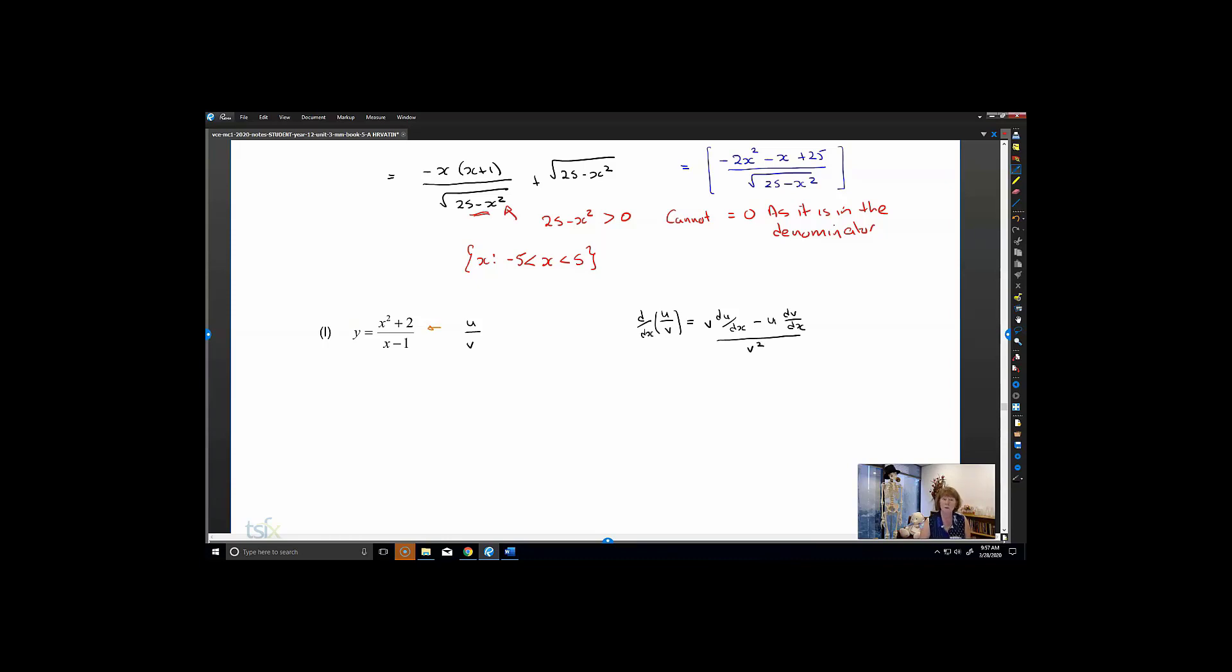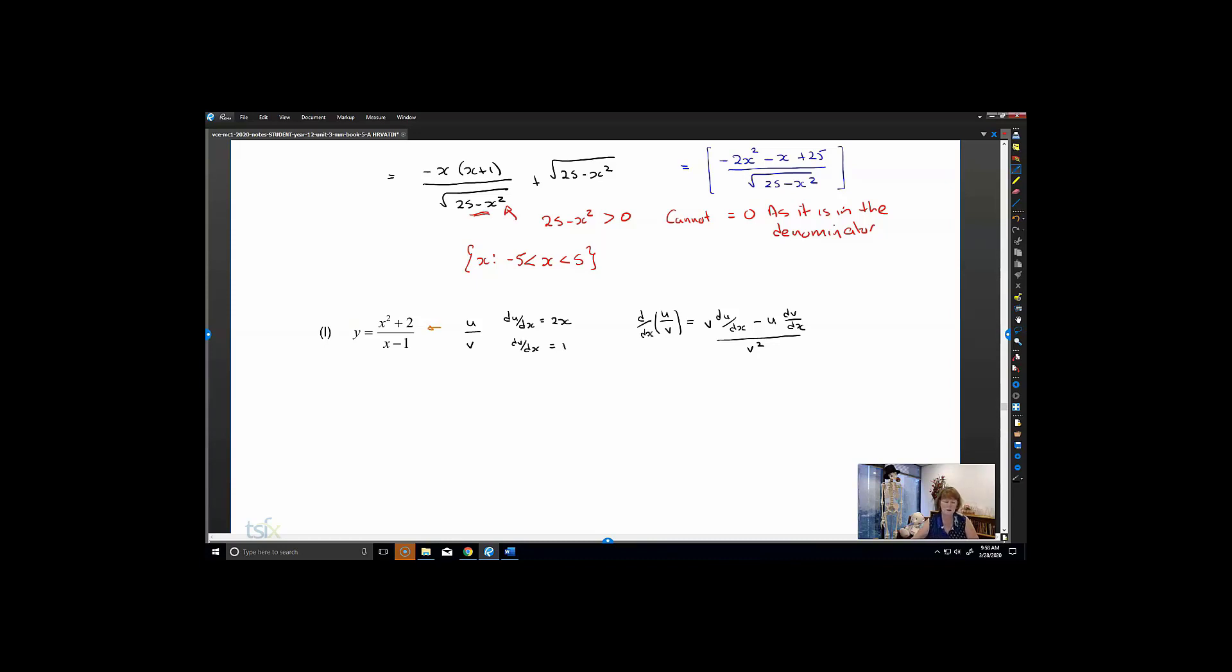We identify this and we can see that du/dx is going to be equal to 2x, and dv/dx is going to be equal to 1. So we put our values in.